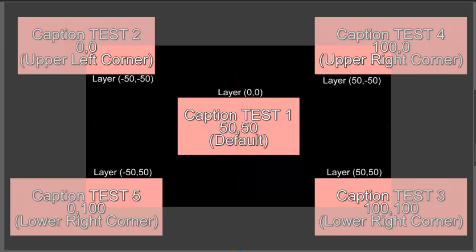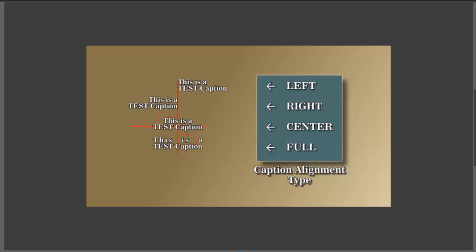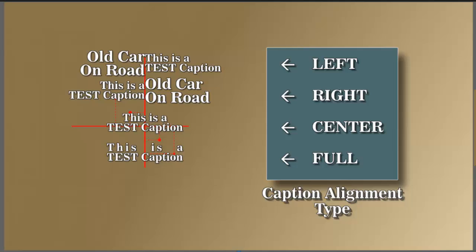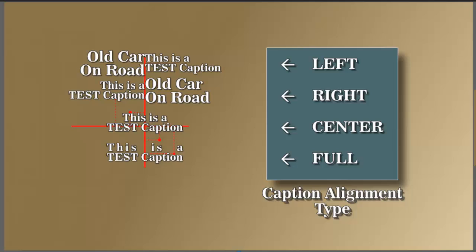Another thing that's different is alignment. Captions have an alignment feature that layers don't have — you have left, right, center, and full, where full is just a variation on center. If you have two captions with the exact same screen location but a different alignment, you could have two captions that appear offset from each other simply because of their alignment. You can have a left-aligned caption right next to a right-aligned one — even though they have the same position, they're just abutted against each other.